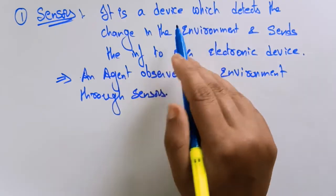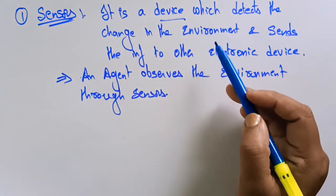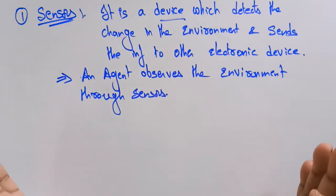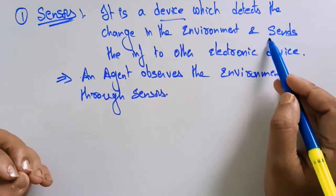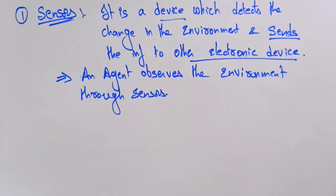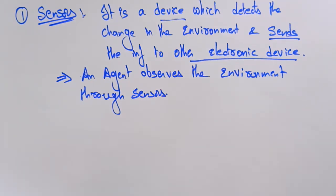That sensor is a device able to detect the change in the environment — whether it is the weather or what condition is outside. Whatever it is able to sense, touch, feel, or see — those changes in the environment — it detects that change and sends that information to other electronic devices or to the activators.